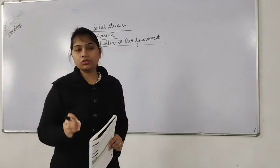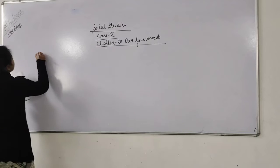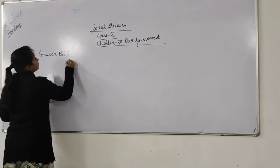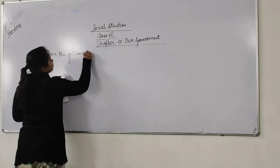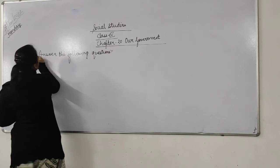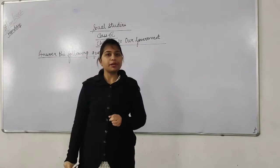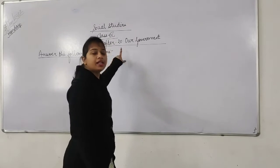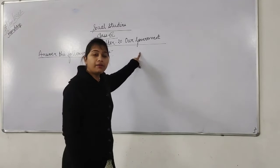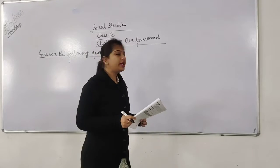All of you take out your social studies books along with your social studies notebooks and start reading your book. Before starting your classwork, you have to mention the date. After mentioning the date, write chapter number 20 and underline it with the help of a scale. Then write the chapter name, which is 'Our Government', and underline that as well. You will do your work in a very neat and good handwriting.